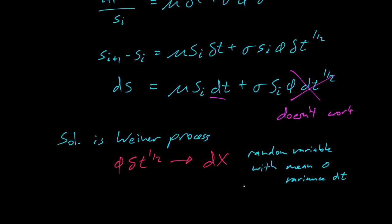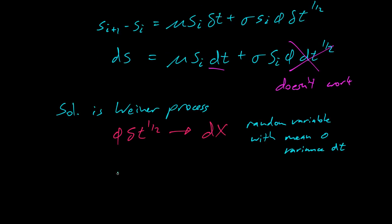And so the mean 0, that means that the expectation of dx is 0, and the expectation of dx squared is the variance part, equals dt.